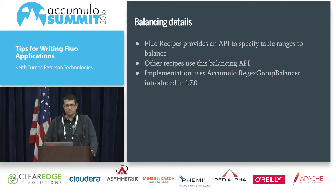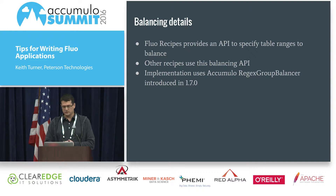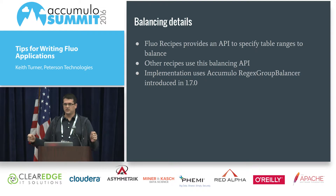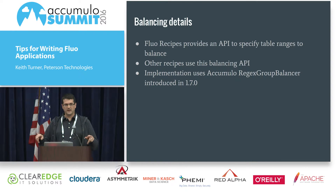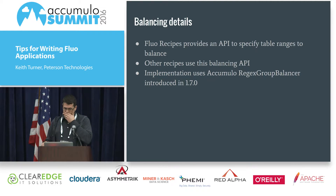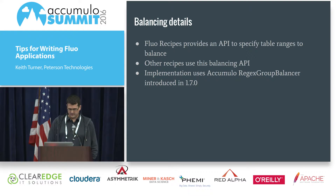The balancing Fluo Recipes provides is built on top of something in Accumulo 1.7 called the Regex Group Balancer. Fluo Recipes makes it easy to configure, and provides a way to register ranges you want balanced. Other recipes build on that by declaring the ranges they want balanced, and there's utility code that configures the Accumulo table and sets up the Regex Group Balancer to get an even spread of data.